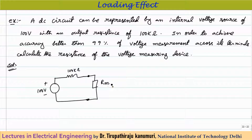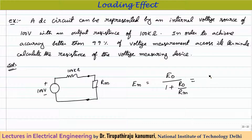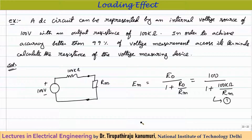The measured voltage is given by: Em = E0 / (1 + R0/Rm), where E0 = 100 V and R0 = 100 kΩ. This is equation (1). For 99% accuracy, the measured value Em equals 99% of the ideal value, so Em = E0 × (99/100) = 100 × 0.99 = 99 volts. This is equation (2).